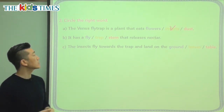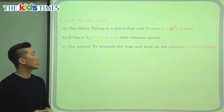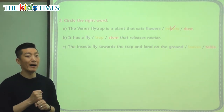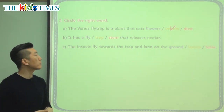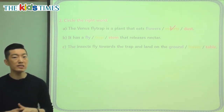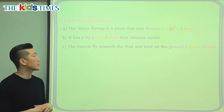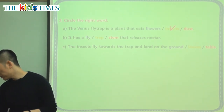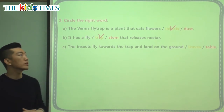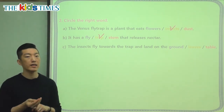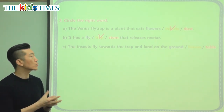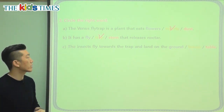The second question: it has a fly trap or a stem that releases nectar? The stem is the stiff, strong body part of a plant — that's not what we learned. Flies do not make nectar either. The correct answer is: it has a trap that releases nectar. Inside the plant, it makes food for bugs and insects to come and eat, and that's what draws them in.